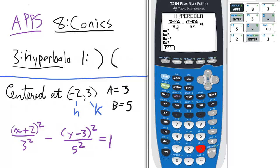If the x is first, it's a horizontal transverse axis. If the y is first, it would be a vertical transverse axis.